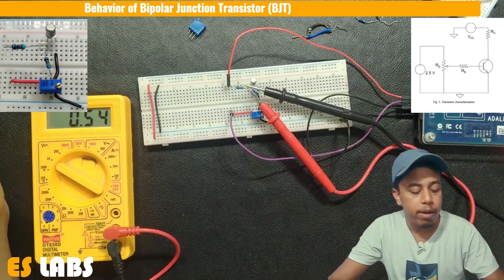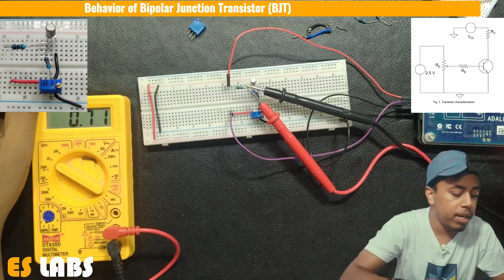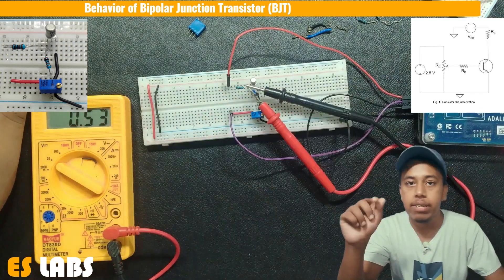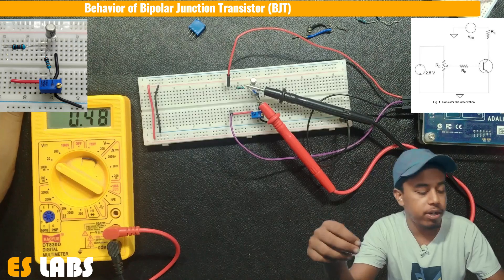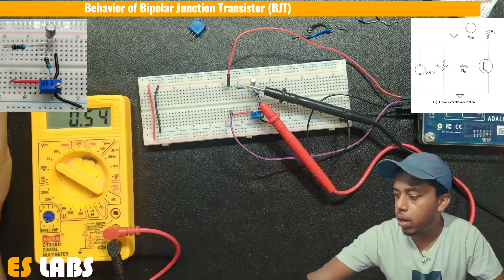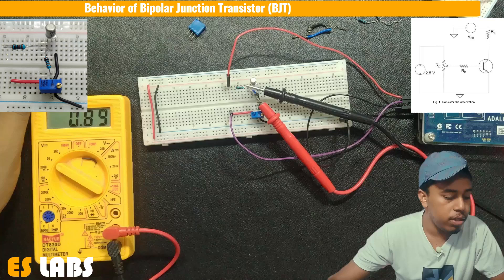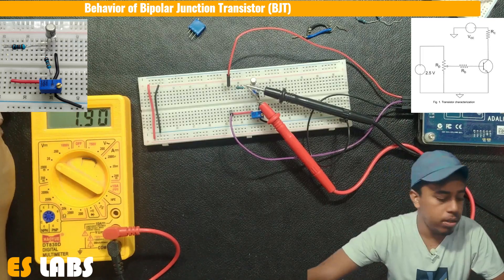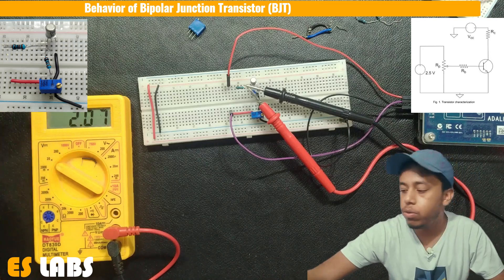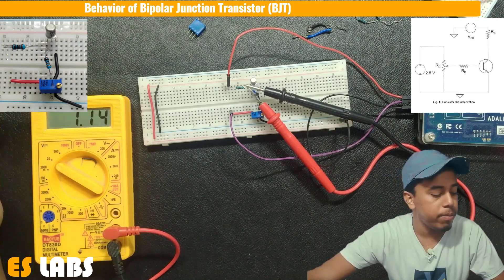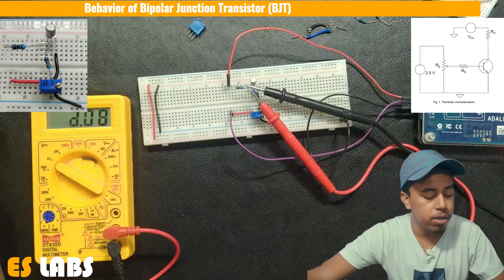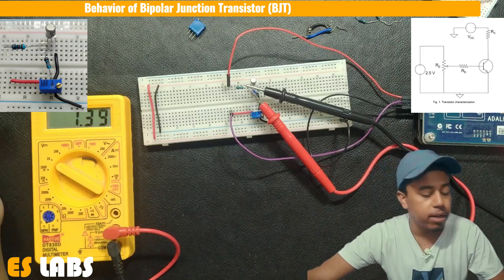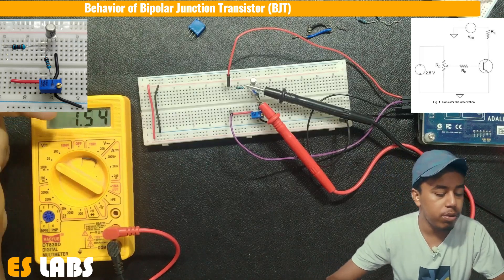So now VCC value is equal to 1 volt and we can see that the value of our VCE, the difference of collector and emitter voltage is equal to 0.5. Now at 2 volt, this is increase to 1.12 volt and at 3 volt, again it goes to 2 volt and when we apply this is equal to 4 volt, the difference of the collector and emitter voltage is going to 2.84 volt.